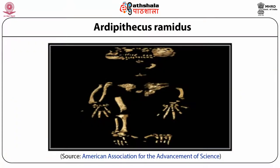Ardipithecus ramidus. This species was discovered by a team led by Tim White and Asfaw in 1994. Most remains are skull fragments. It has been dated to about 4.4 to 5.8 million years. Evidence suggests that they were possibly biped and that some individuals were about 122 centimeters tall. The teeth are intermediate between those of earlier apes and Australopithecus afarensis, which is the earliest known form of Australopithecus. One baby tooth is very primitive and resembles a chimpanzee tooth more than any other known hominid tooth.